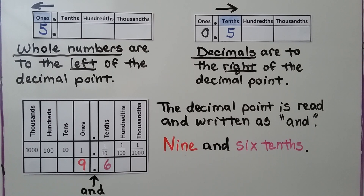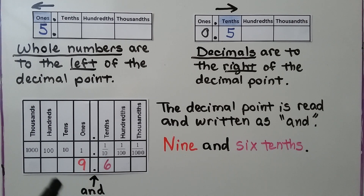Whole numbers are to the left of the decimal point, and decimals are to the right. The decimal point is read and written as AND. So this would be nine AND six-tenths.